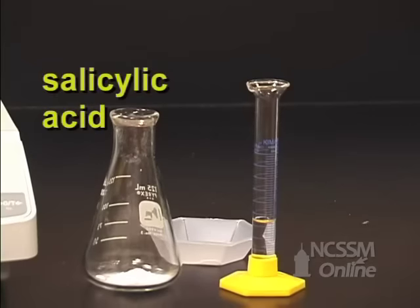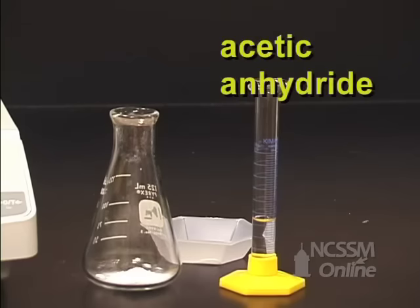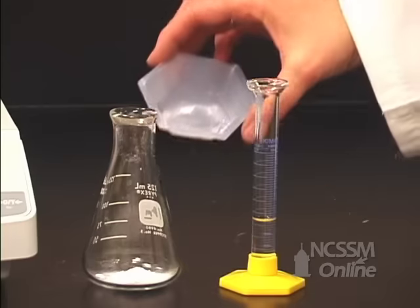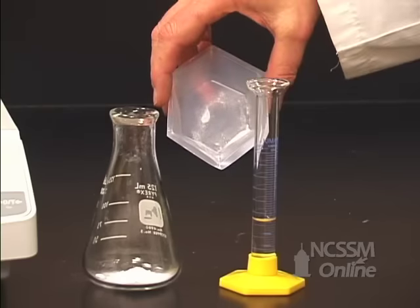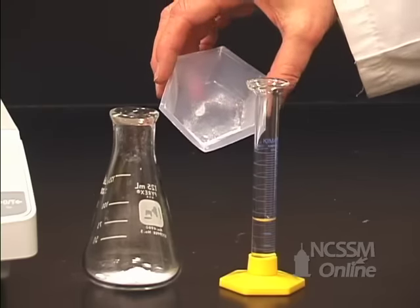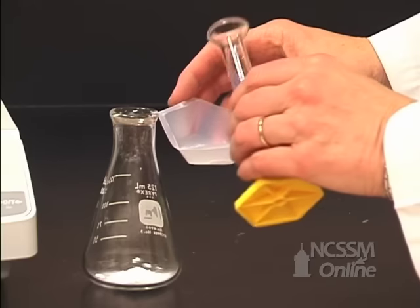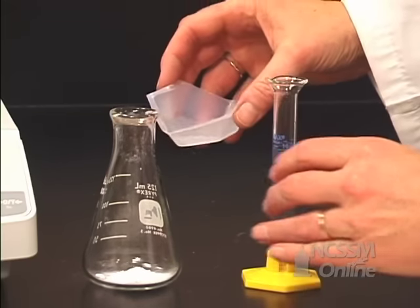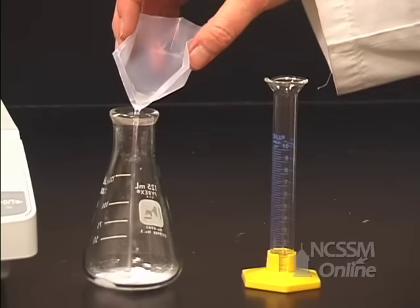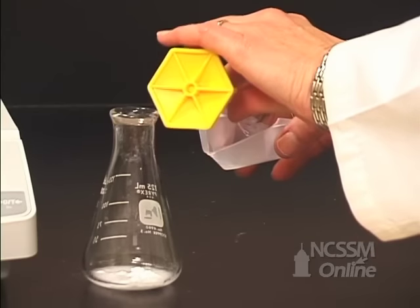Now we want to add between 4 and 5 milliliters of the liquid acetic anhydride. As you can see, there's a little of our salicylic acid in our weigh boat. So in order to make sure we get it all in there, I'm going to pour the acetic anhydride here, swirl it around a bit, and then get all of it in my Erlenmeyer.